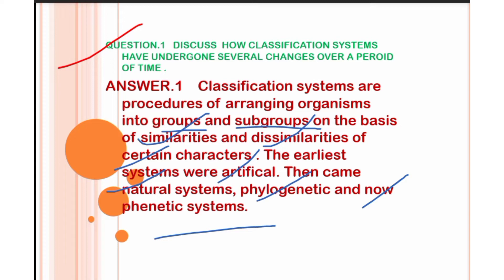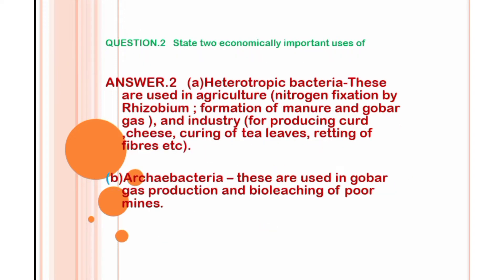These changes occurred because organisms themselves show variations — mutations happen — so obviously classification systems also changed, from artificial to natural, then phylogenetic, and then the phenetic system.